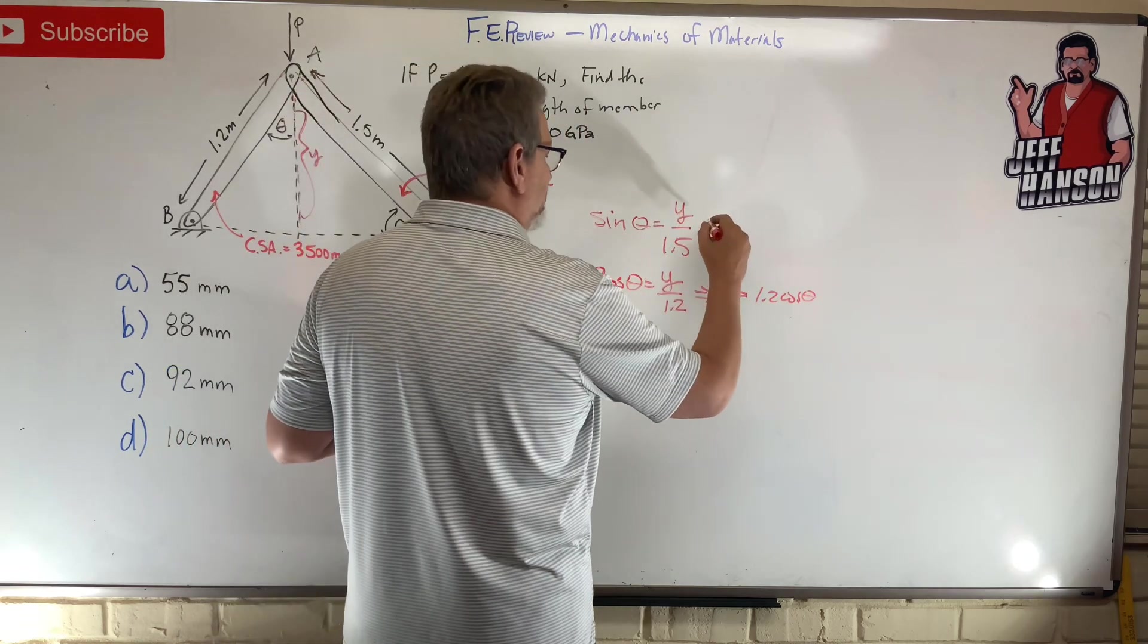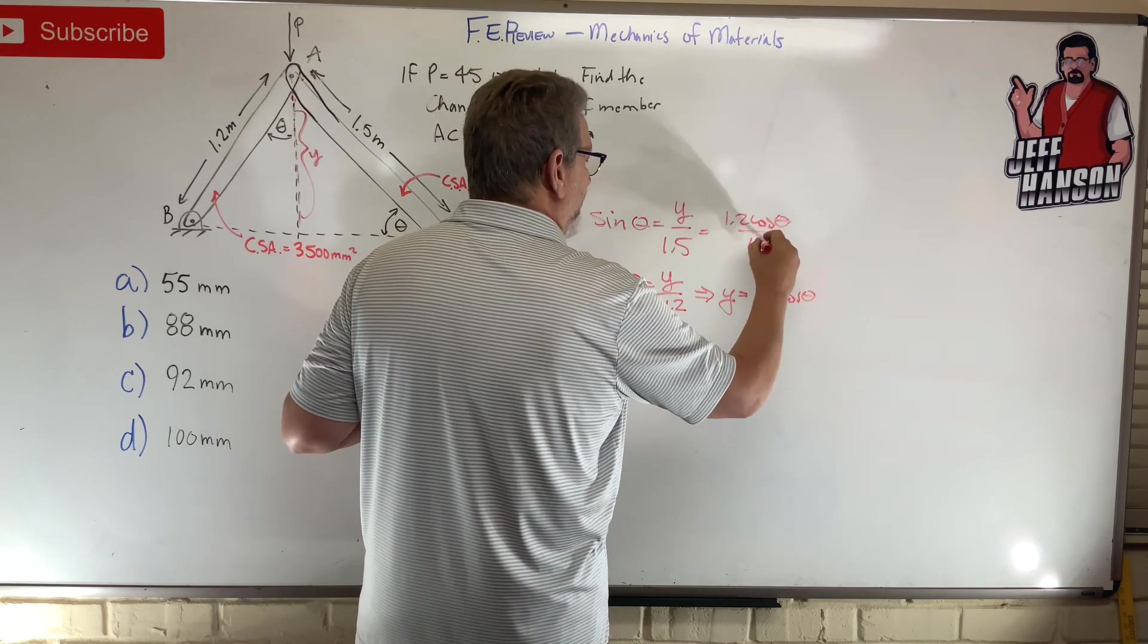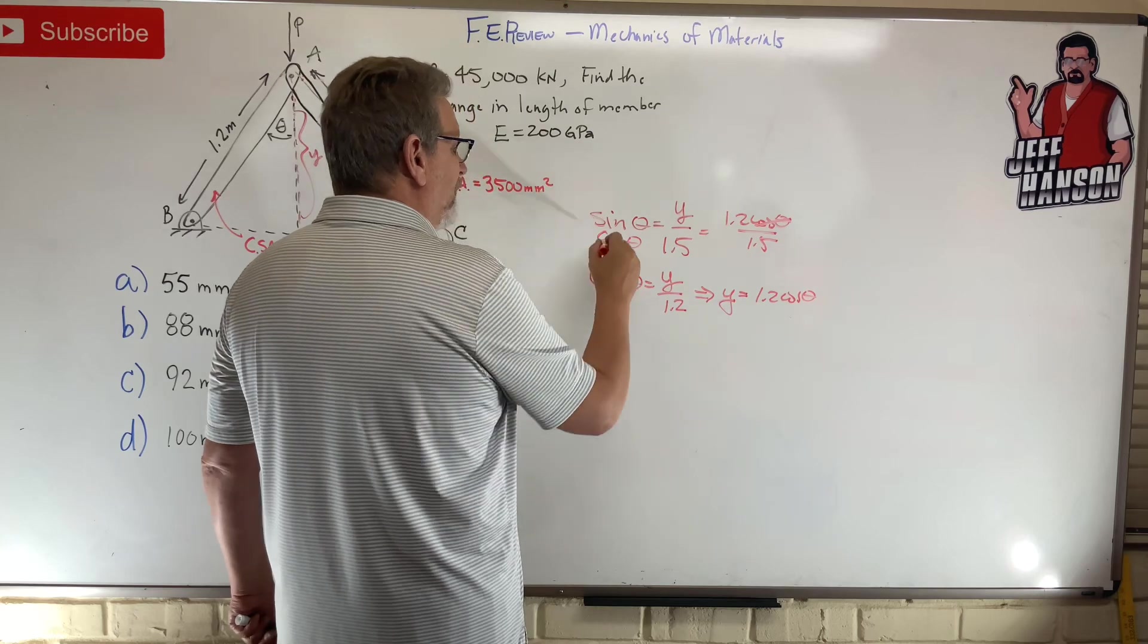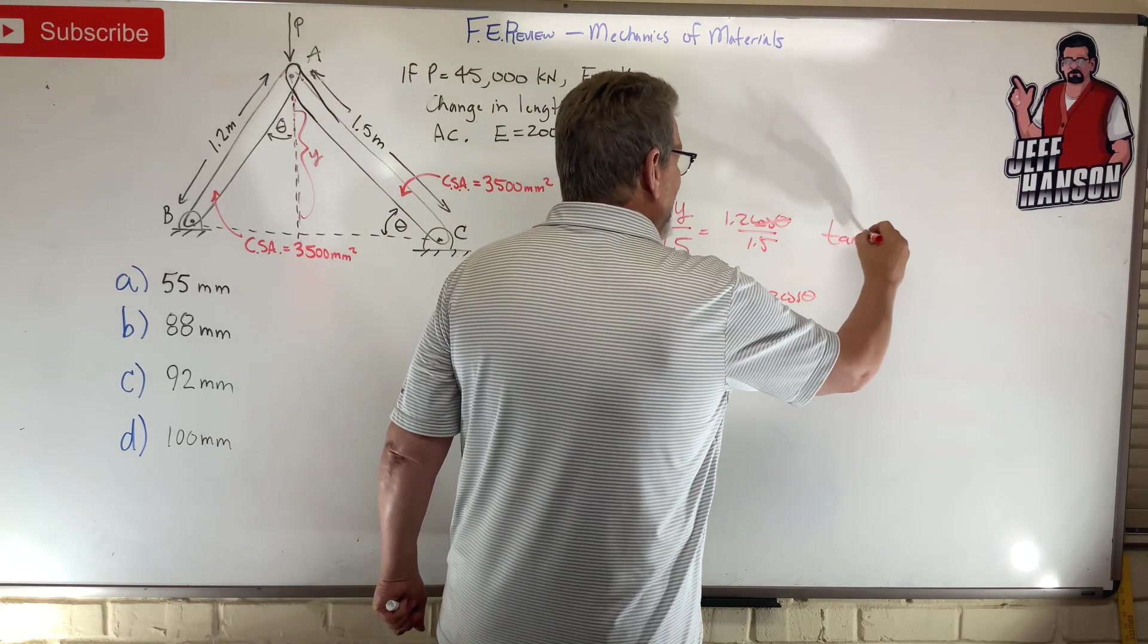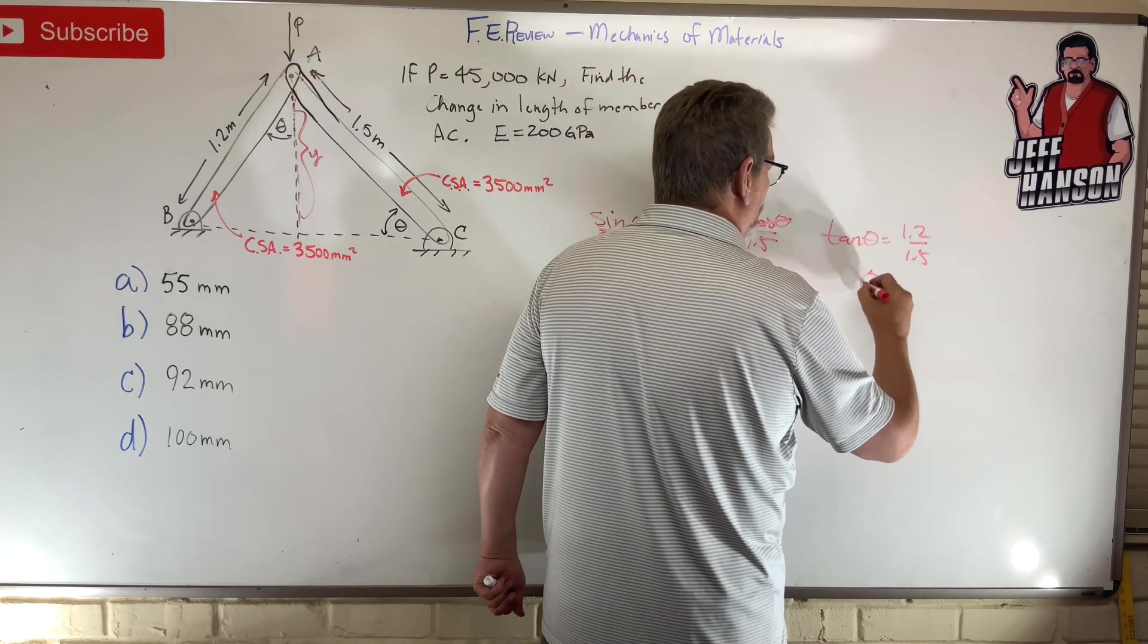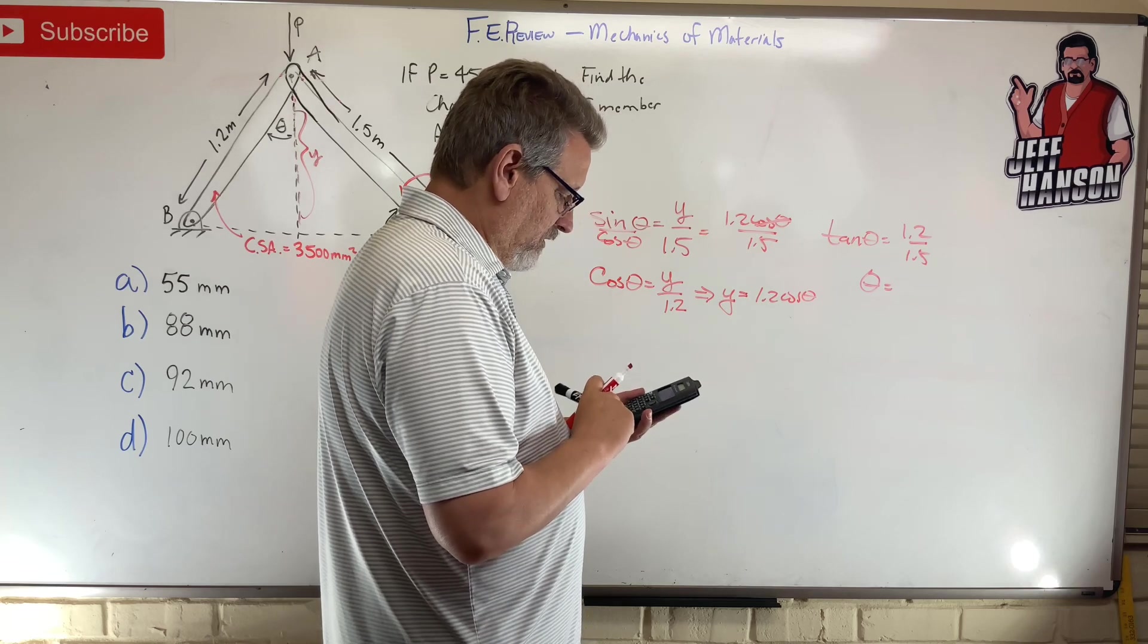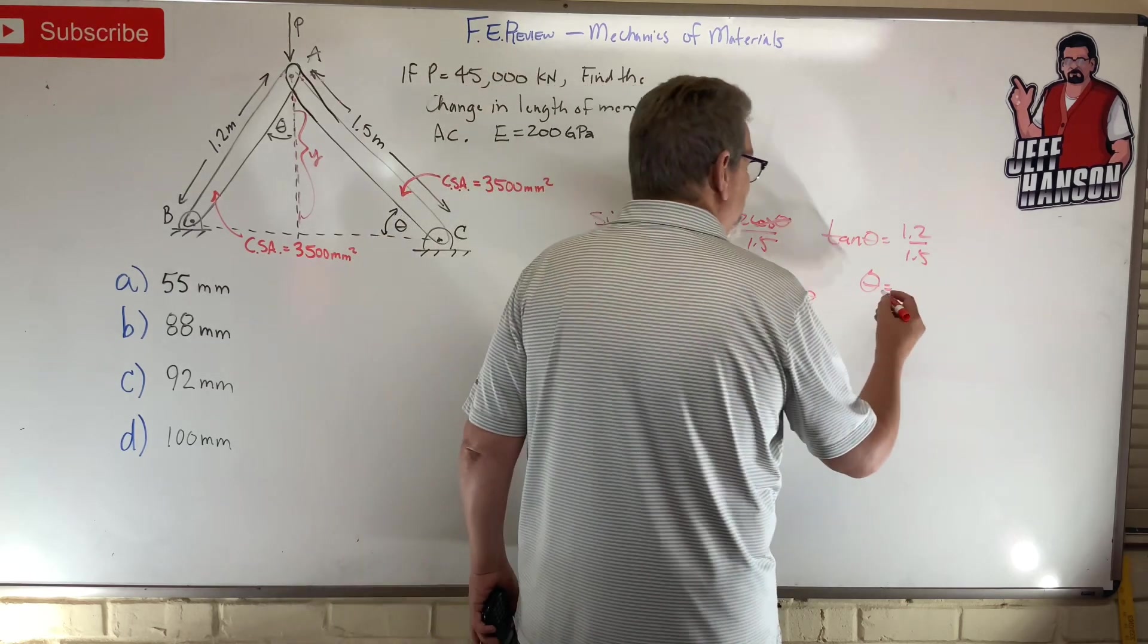Right, and I get 1.2 cos theta over 1.5. Do you see it? Divide both sides by cosine theta, right? And what do we get? We get tan theta is equal to 1.2 divided by 1.5. Oh dude, I got theta all day. Okay, theta 1.2 divided by 1.5, inverse tan, 38.66 degrees.